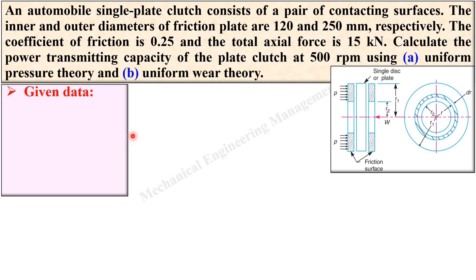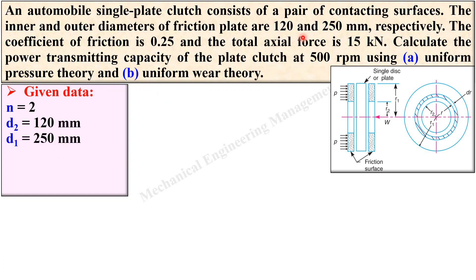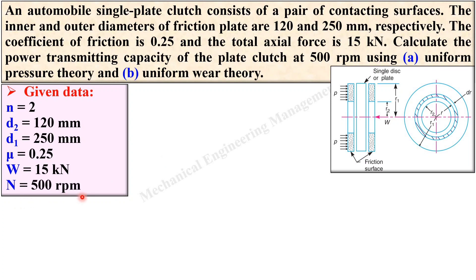Let us write first of all the given data in symbolic notation. A single plate clutch consists of a pair, that means n is equal to 2. The inner and outer diameters mean d1 and d2. The coefficient of friction is mu. Total axial force is w. Calculate the power transmitting capacity, that means p is equal to question mark, at 500 rpm, so N is equal to 500.